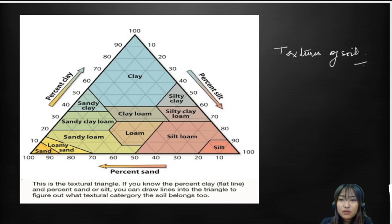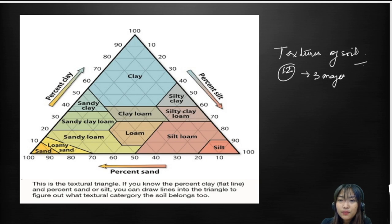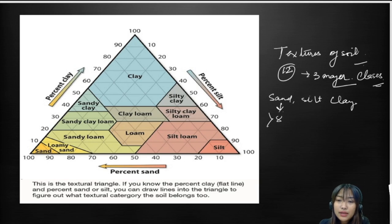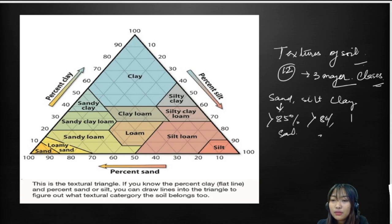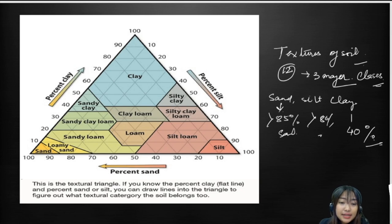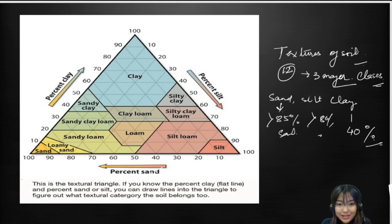There are broadly about 12 textural classes, but only three major classes: sand, silt, and clay soils. In sandy soil we have about 85 percent sand; in silt soil more than 80 percent silt; and in clay soil about 40 percent clay. The diagram represents the textural triangle, where one axis shows percent clay, another percent silt, and the third percent sand.